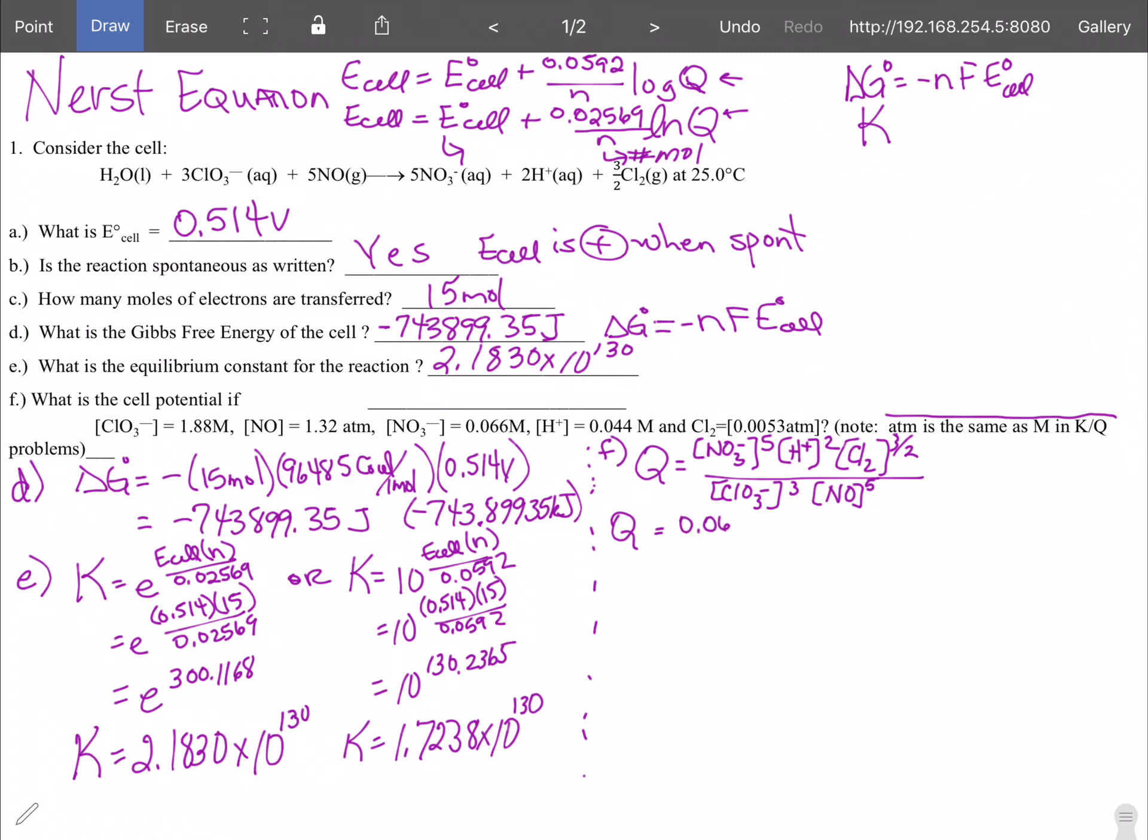So here Q is going to be equal to 0.066 and this is going to be molarity to the fifth times 0.044 molar because that's the hydrogen squared, the chlorine is 0.0053 atmospheres raised to the three halves power divided by 1.88 molar cubed times the NO is 1.32 atmospheres raised to the fifth power. Be careful when you put this through your calculator because what actually ends up is you end up with Q is equal to 3.5131 times 10 to the minus 14.